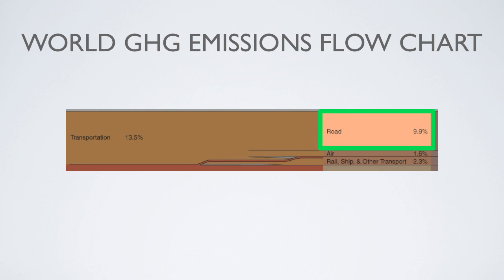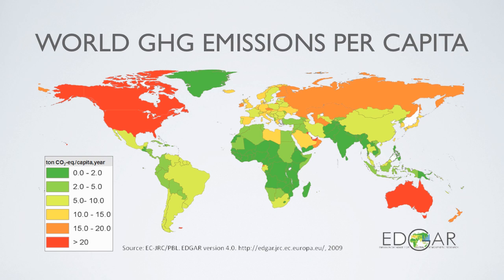In transportation, the vast majority of emissions come from ground travel. This is because automobiles are a highly inefficient form of transportation. In fact, the efficiency of the combustion engine has only marginally improved since the Model T first went into production 100 years ago. This graph represents a global view and will change from country to country according to the country's economic makeup.